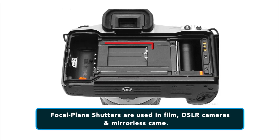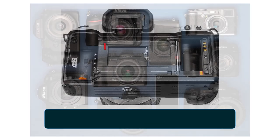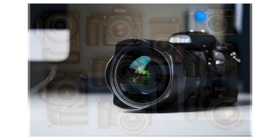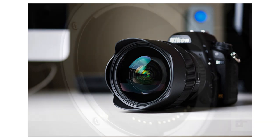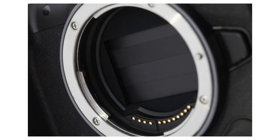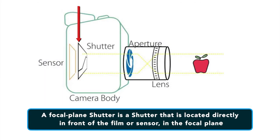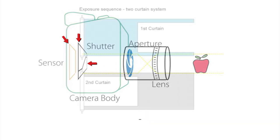Focal plane shutters are used in film, DSLR cameras and mirrorless cameras. Photo cameras use a variety of shutter types; however, cameras with interchangeable lenses primarily have focal plane shutters. A focal plane shutter is located directly in front of the film or sensor in the focal plane.